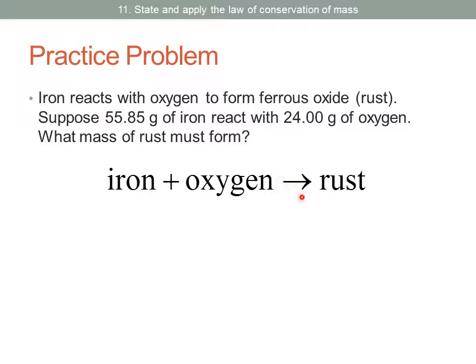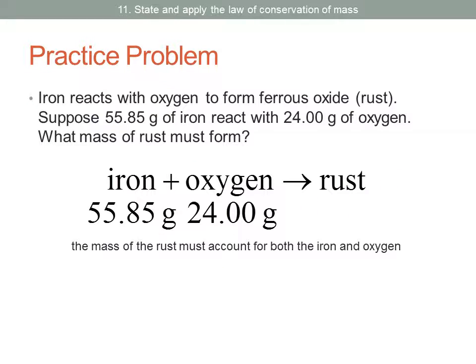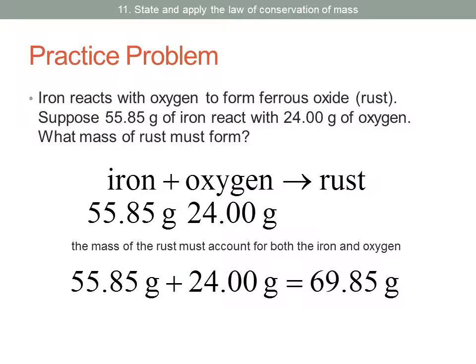Notice the arrow separates reactants from products. So the mass on the left side that we have has to equal the mass on the right side. We're told that we have 55.85 grams of iron and it reacts with 24 grams of oxygen. So this total, if we were to add up 55.85 and 24, that has to equal the mass of rust that we would get. If we add them up, that would give us 79.85 grams. That should be the mass of rust that's collected in this reaction.